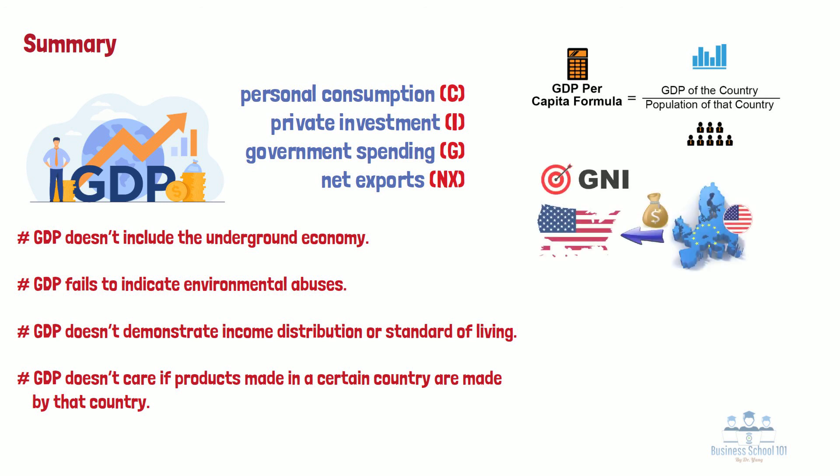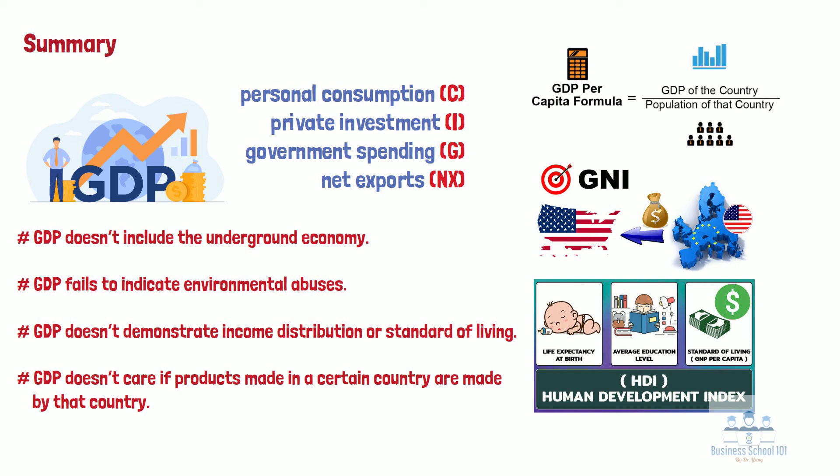Gross national income, or GNI, is the value of all incomes produced by a country's residents, including both citizens and foreign residents, within its geographical borders, plus net receipts of income such as wages, salary, and property income from abroad. Finally, the Human Development Index, also known as HDI, is an indicator that specifically focuses on people and their capabilities to assess the development and welfare of a country. Unlike GDP and GNI, HDI not only takes the economic factor into account but also includes life expectancy and educational attainment, which provides a richer picture of a country's social welfare.